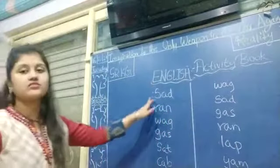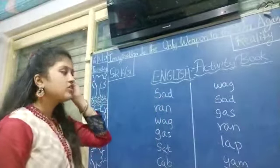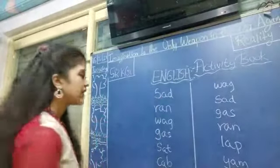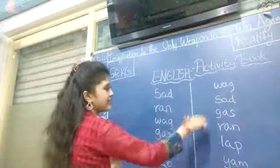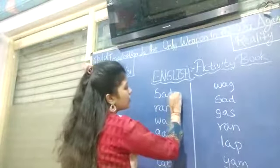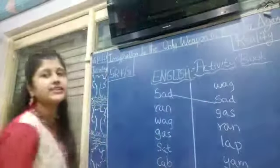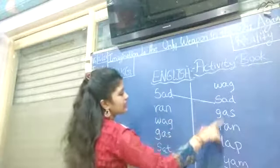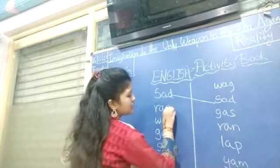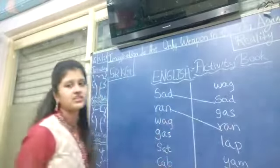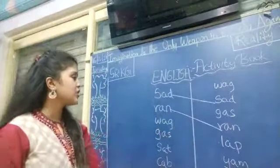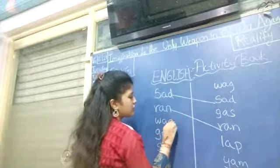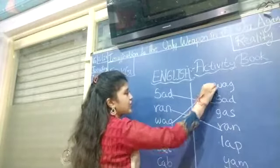So what is given here? First, S-A-D, sad. So you have to match this word only here. So where is S-A-D sad over here? So you have to match like this. S-A-D sad. Now R-A-N, ran. So where is ran over here? R-A-N ran. So you have to match like this. Now W-A-G, wag. So where is wag over here? W-A-G wag. So you have to match wag like this.